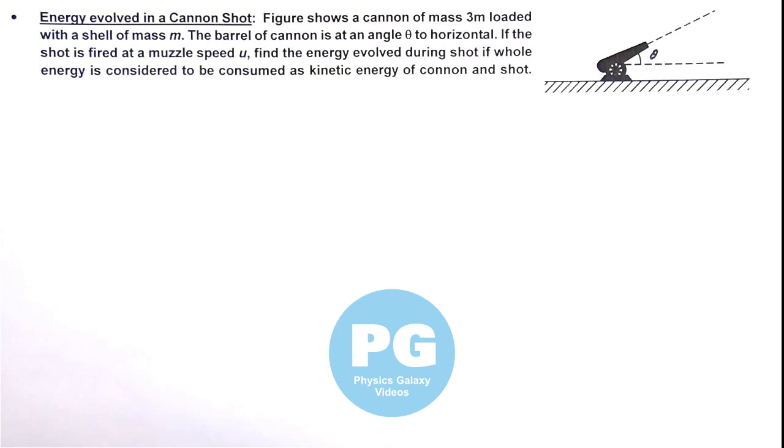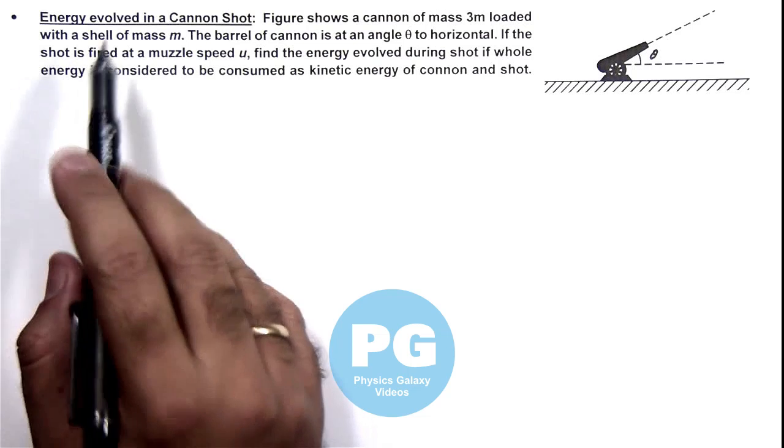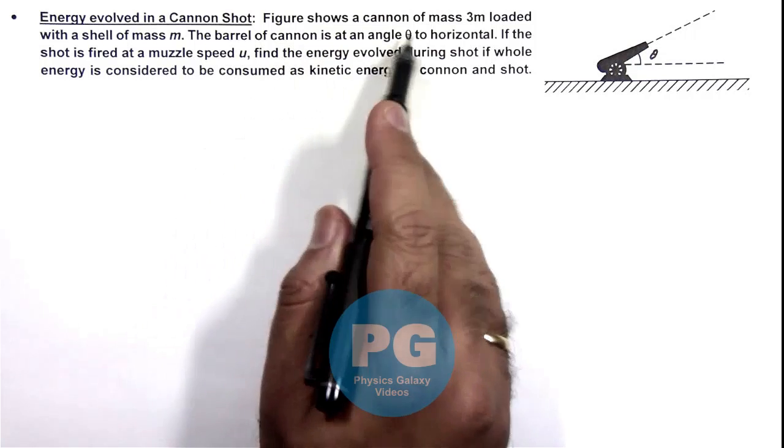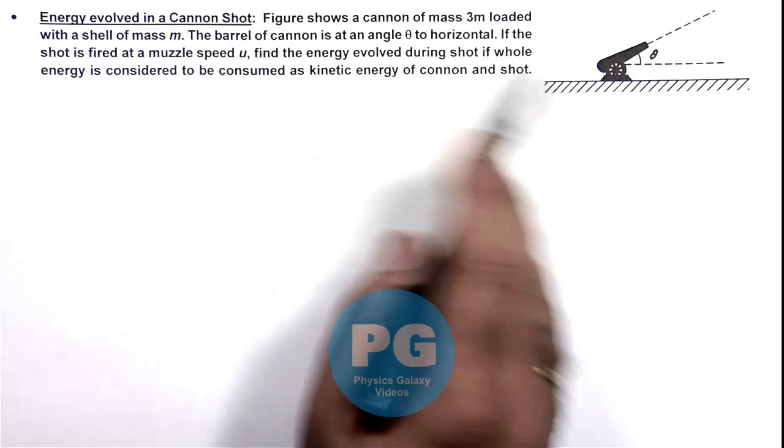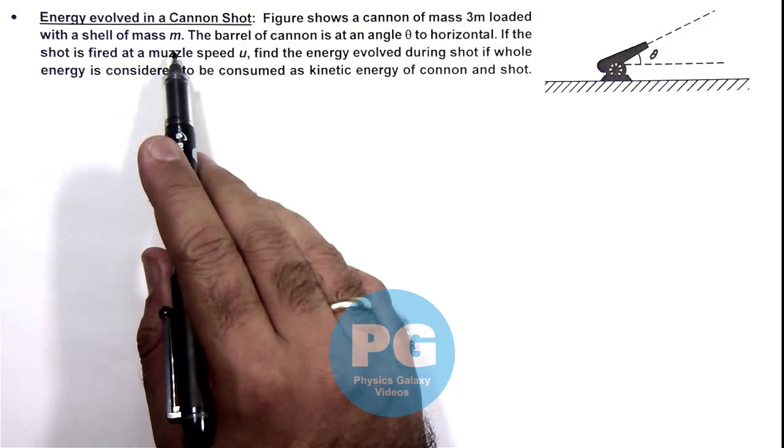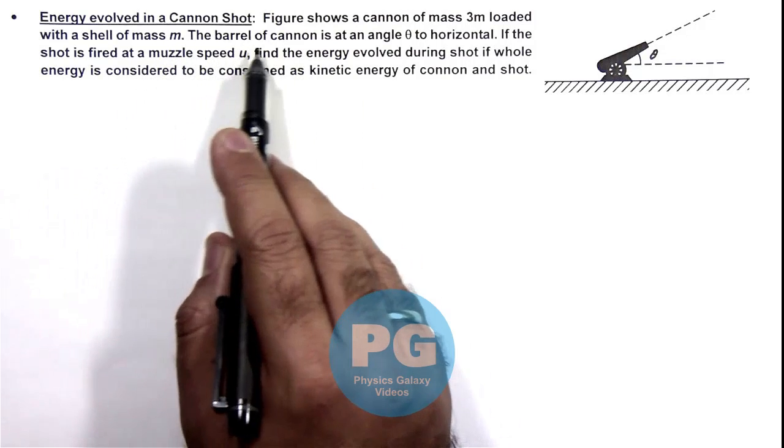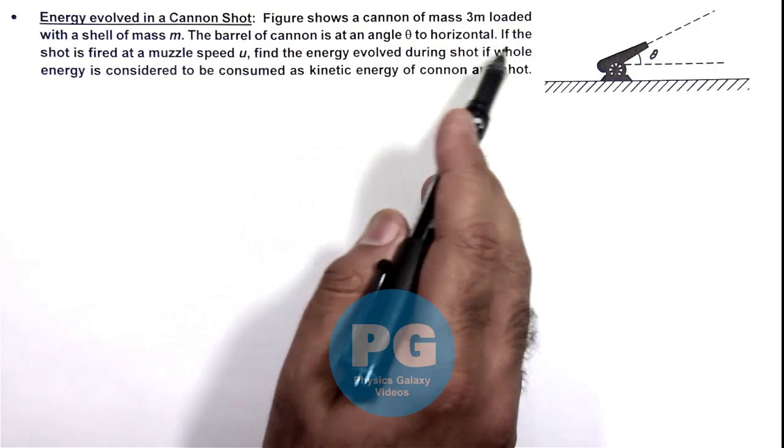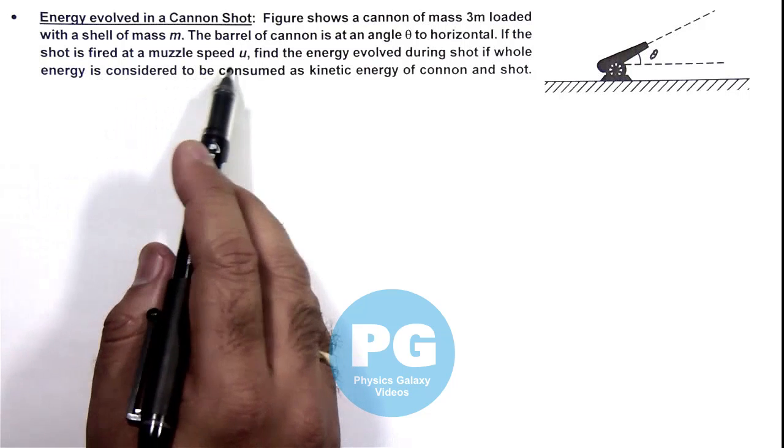In this illustration, we'll study the energy evolved in a cannon shot. The figure shows a cannon of mass 3m loaded with a shell of mass m. The barrel of cannon is at an angle theta to horizontal, and the shot is fired at a muzzle speed u.